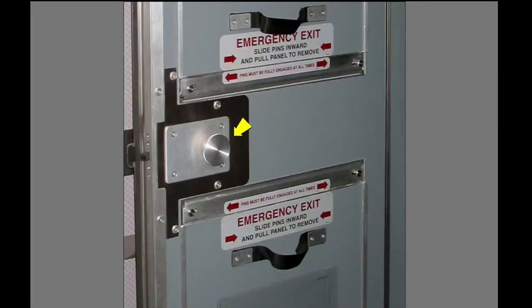When the door is locked, you can use the door handle to exit the flight deck. Rotating the door handle unlocks the door. Now let's look at the deadbolt.